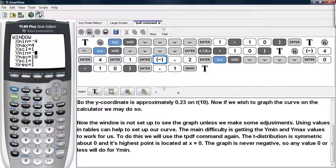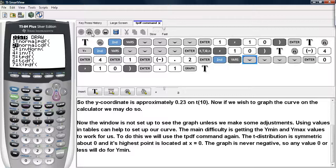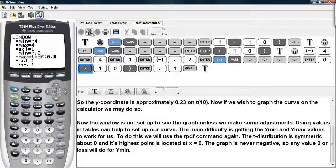Now, our y-min, we're going to set to be negative 0.2, and then our y-max is where the tPDF command comes in again. We're going to go back to the distributions, select tPDF, and tell it to find the value at 0 when you have 10 degrees of freedom. We'll go ahead and do the y-scaling at 0.1, and then we'll hit graph.